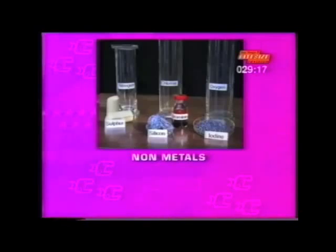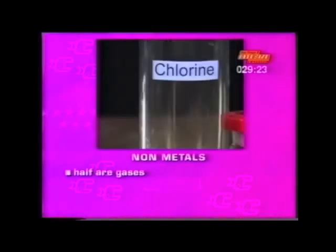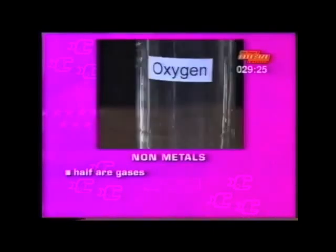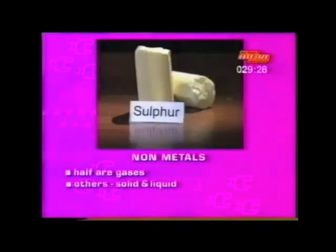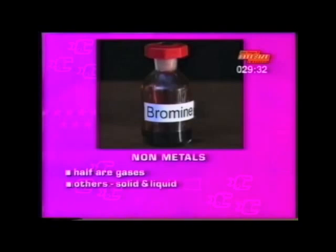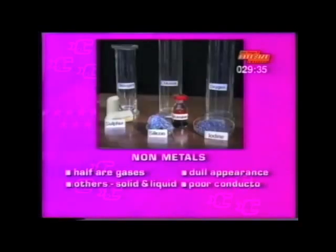Non-metals, on the other hand, are a very diverse group of elements. Half of them are gases at room temperature — for example, chlorine and oxygen are gases. Other non-metals are carbon and sulphur, which are solids, and bromine, which is a liquid at room temperature. Their appearance is dull, they are poor conductors of electricity, and they are never magnetic.